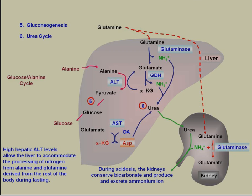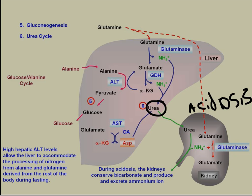Once glutamine has reached the liver, it can either go into the liver or go directly to the kidney. For the kidney, why would you excrete nitrogen directly from glutamine there? The main reason would be during acidosis. During acidosis, your body wants to conserve bicarbonate, and bicarbonate is used in the urea cycle. So in order to conserve the bicarb, you would divert from the urea cycle and instead send the nitrogen directly out through glutamine into the kidney, where glutaminase would break off the amine group, reforming glutamate, and the ammonia would get excreted in the urine.